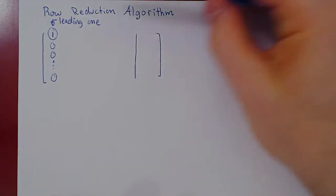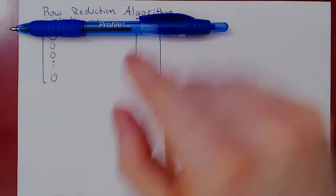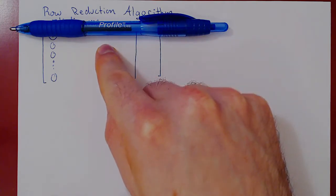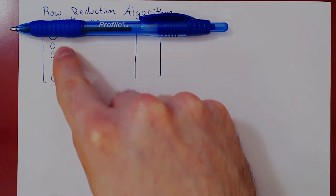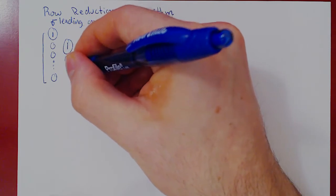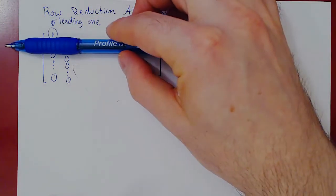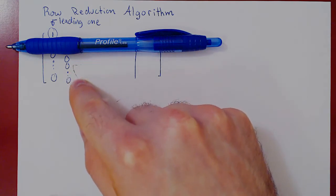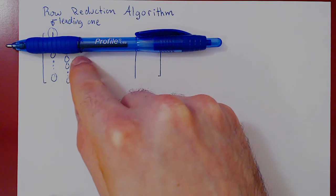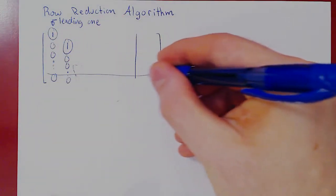Once that's done, you will simply ignore the top row of your matrix, and repeat this very same idea on the smaller sub-matrix. You will start over, look at the leftmost column, and try to introduce a leading 1 in the top row. Once you introduce this leading 1, you will use it with the third type of row operation to kill all the entries below. Then you ignore this row too and repeat — look in the leftmost column, find a way to introduce a 1 in the top row, kill everything below — and keep going until you reach the bottom row.